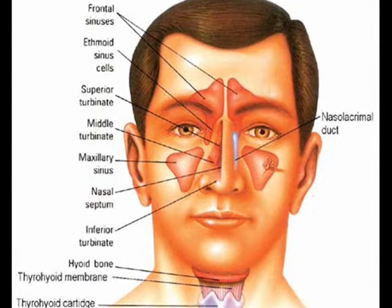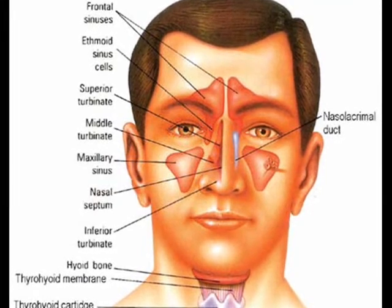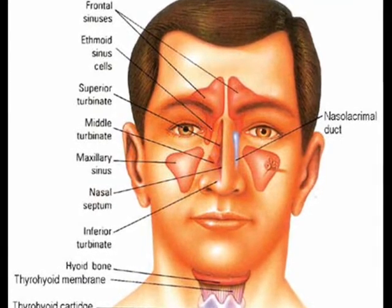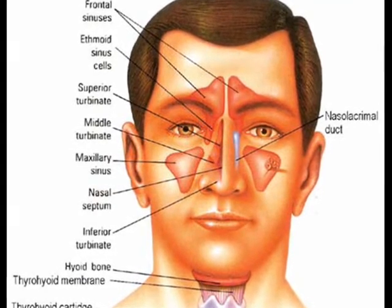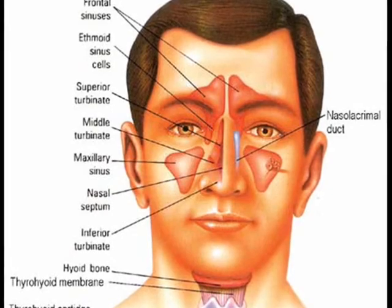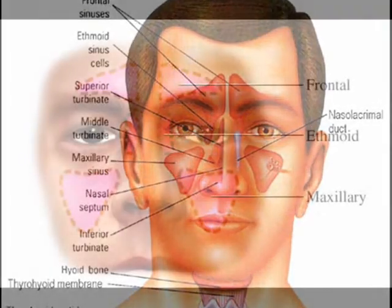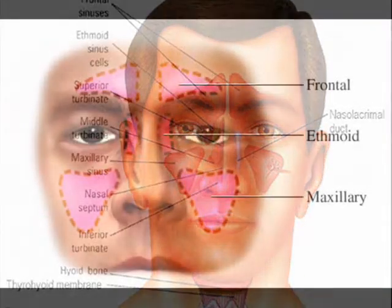Basically, the maxillary is around your nose, the ethmoid is just between your eyes, and the frontal is just above your eyes.